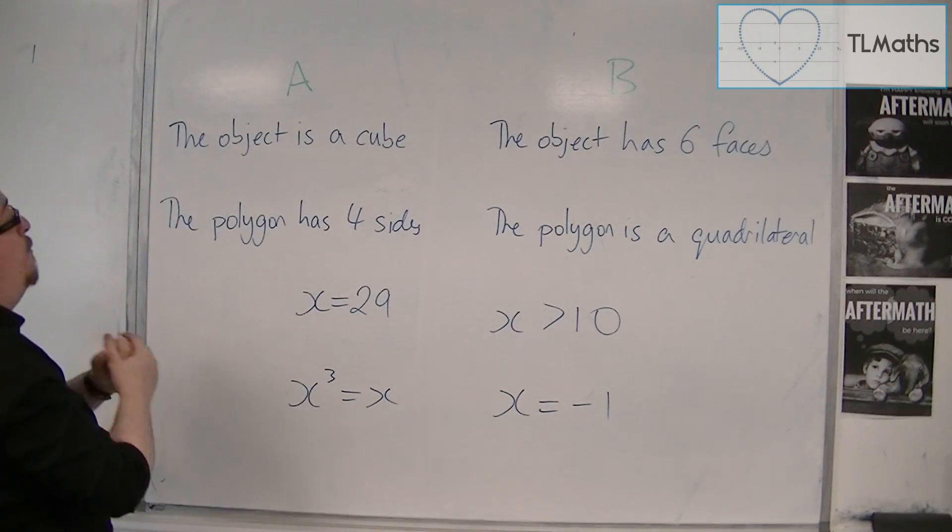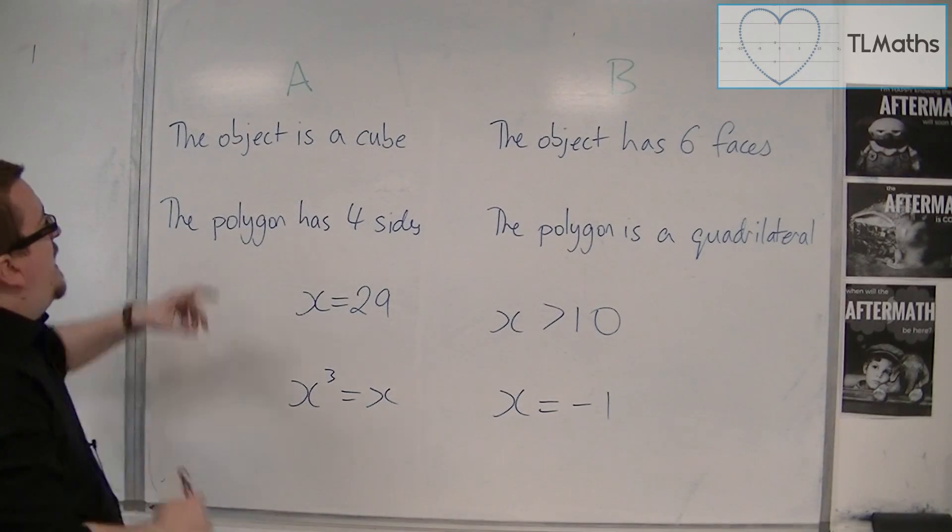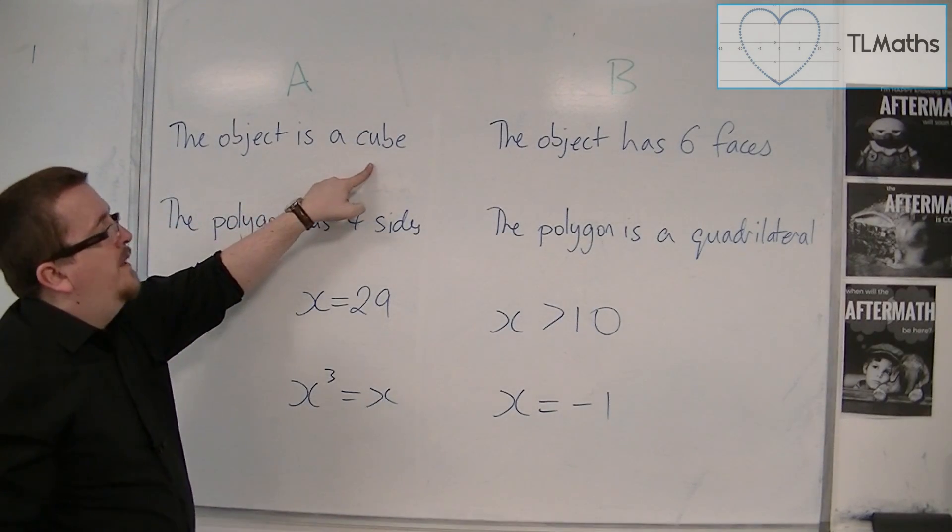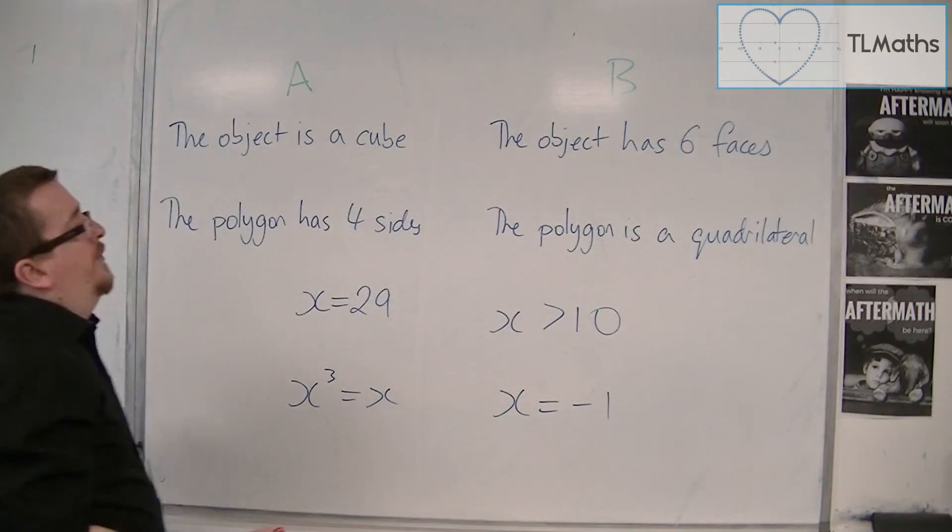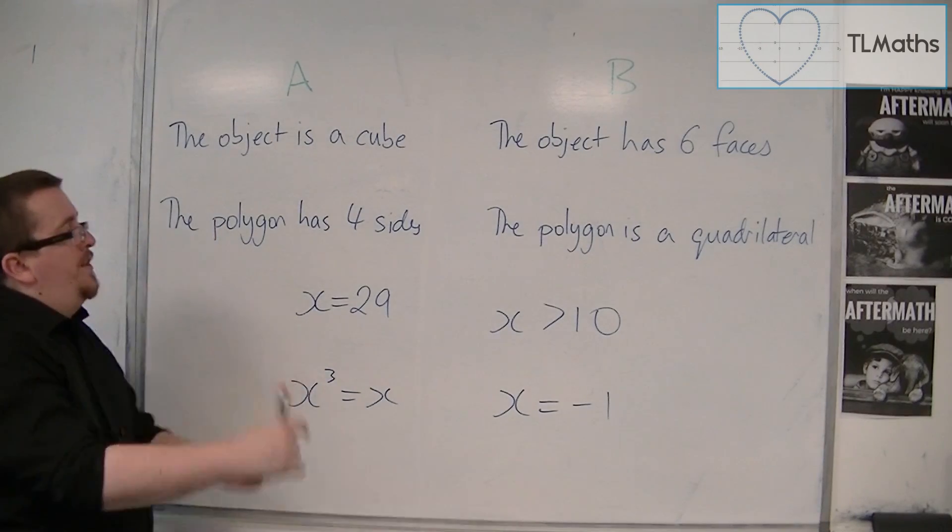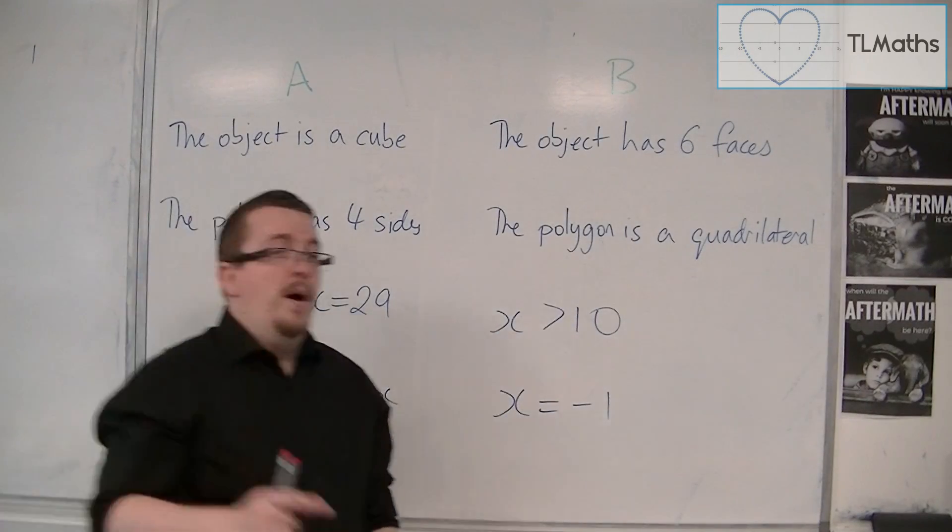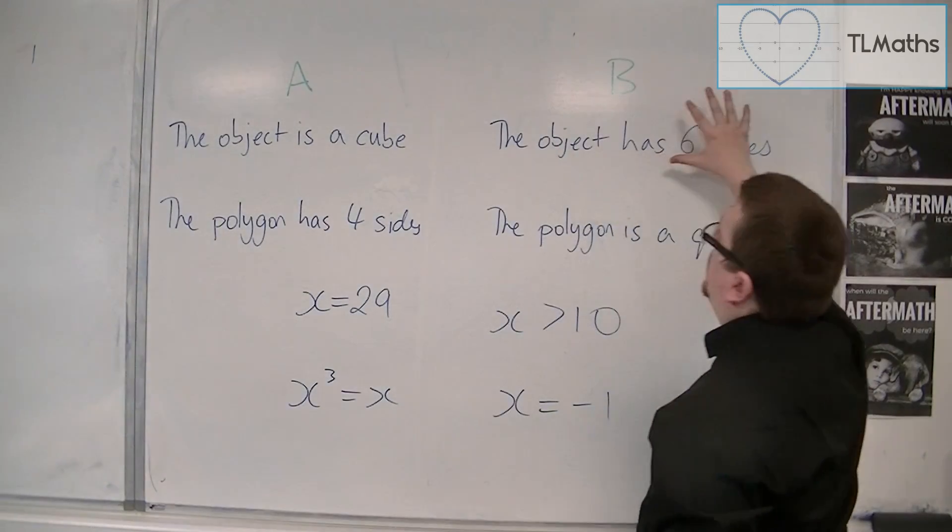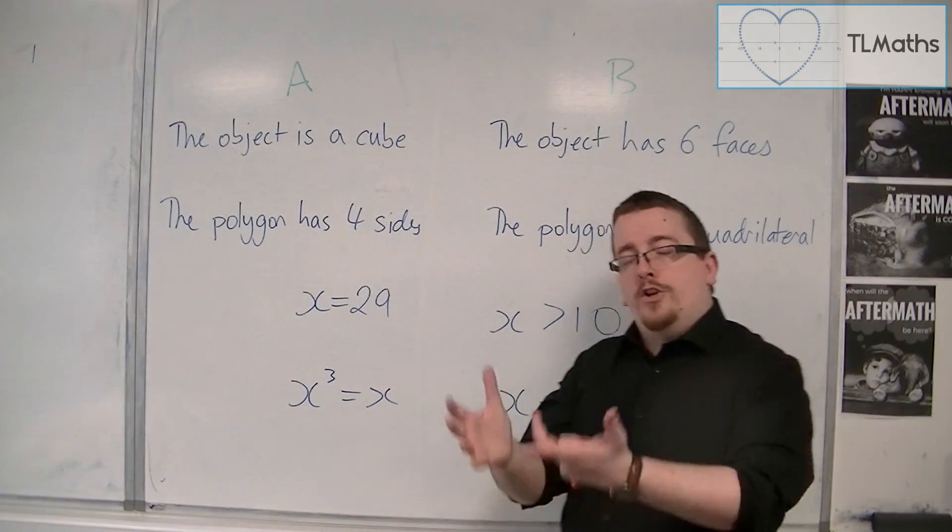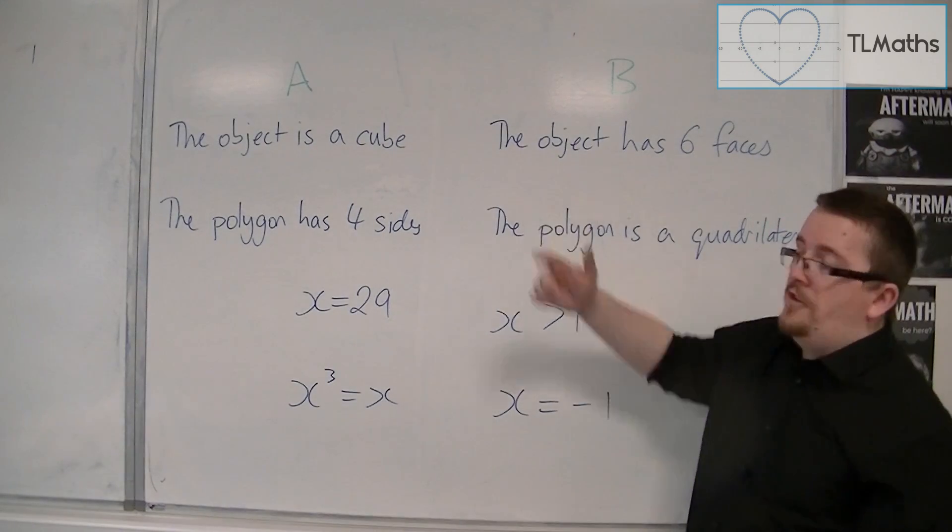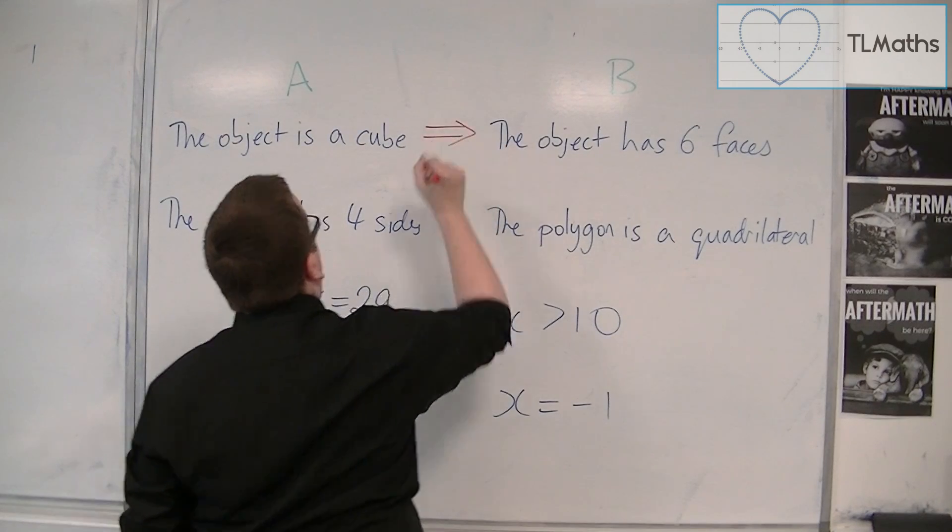So the first line, we have the object is a cube. The object has six faces. Well, if the object is a cube, then it definitely has six faces. So think of it like a die. So the object is a cube, the object definitely has six faces. But if the object has six faces, does that necessarily mean that it's a cube? Well, no. It could be a cuboid, for example. It doesn't have to be a cube. And so the arrow only points from left to right.